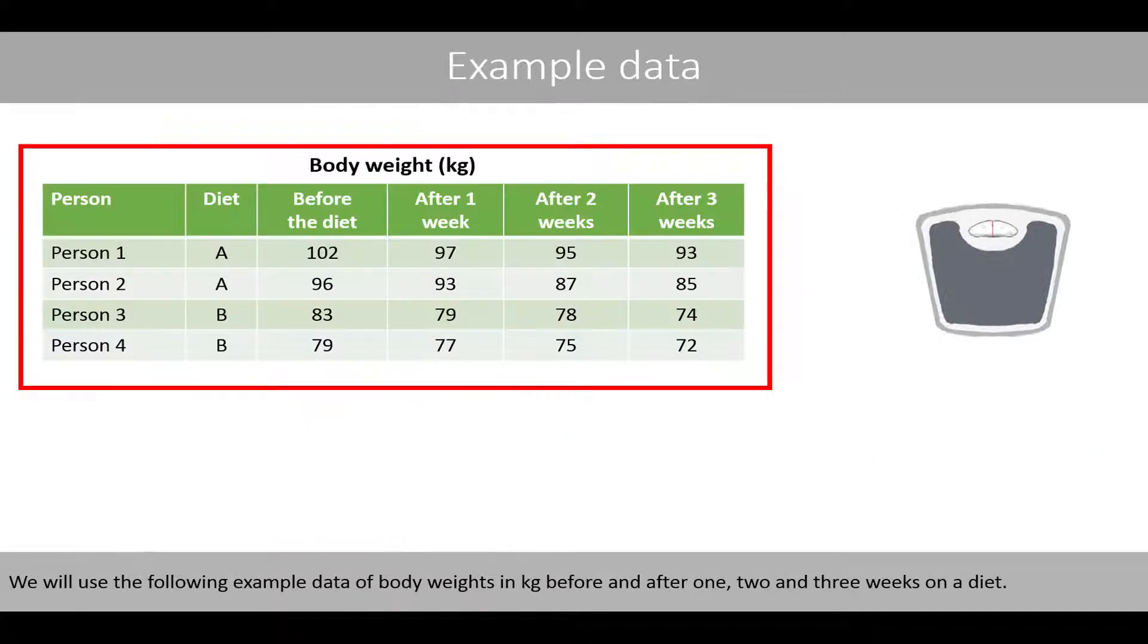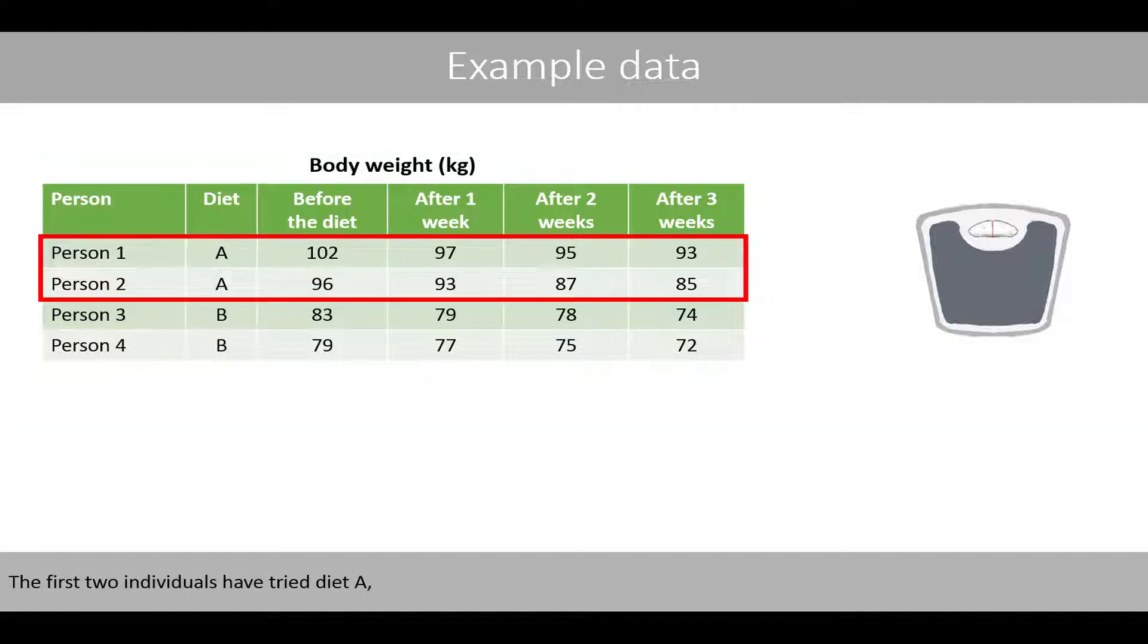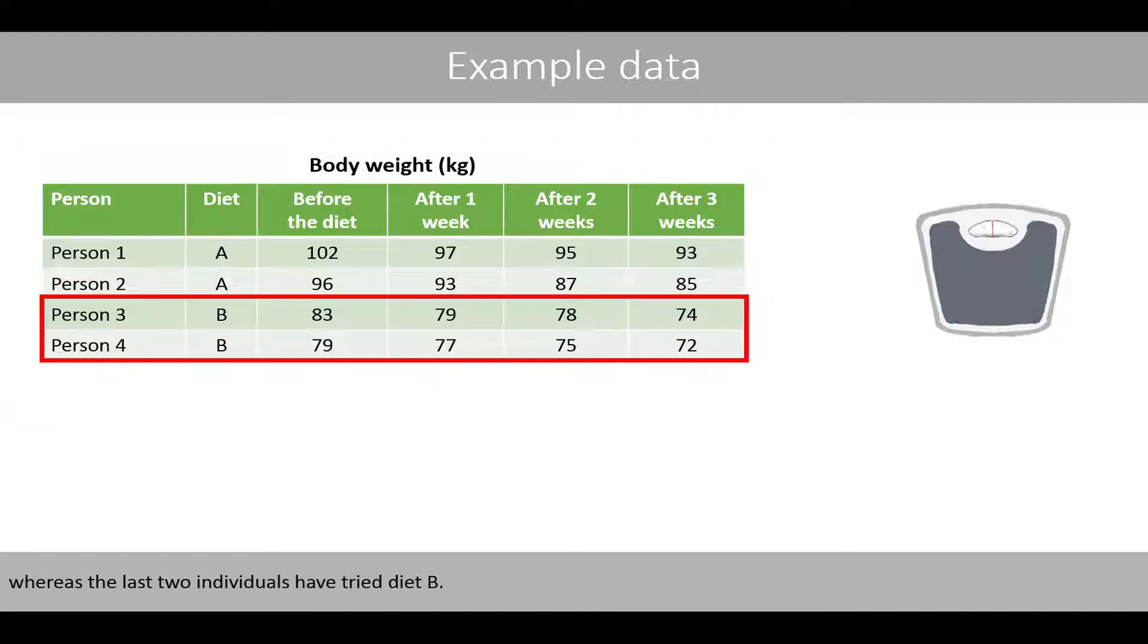We will use the following example data of body weights in kilos before and after one, two and three weeks on a diet. The first two individuals have tried diet A, whereas the last two individuals have tried diet B.